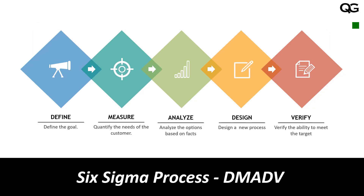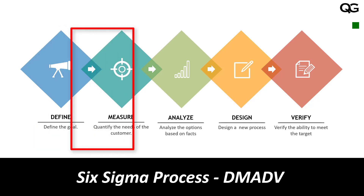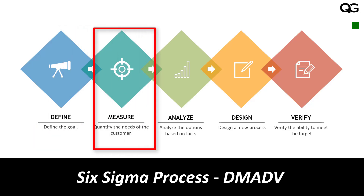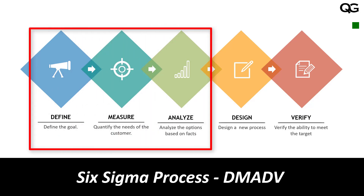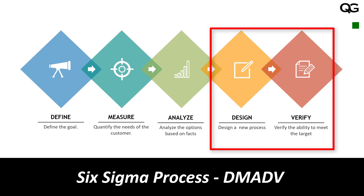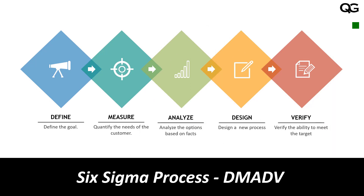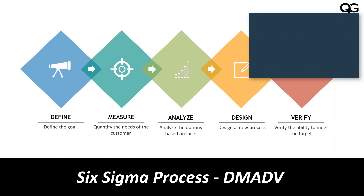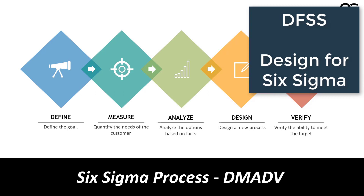If you are designing a new process, the approach is DMADV. DMADV stands for D for Define, M for Measure, A for Analyze — these three are the same as in DMAIC — but the next two stages are Design and Verify. This is used when improving or creating a new process and is also called DFSS, Design for Six Sigma.